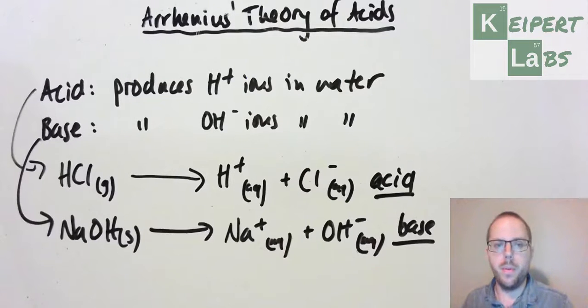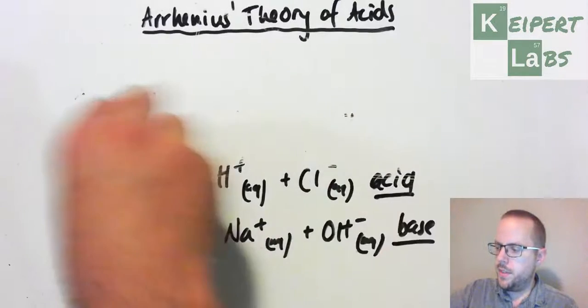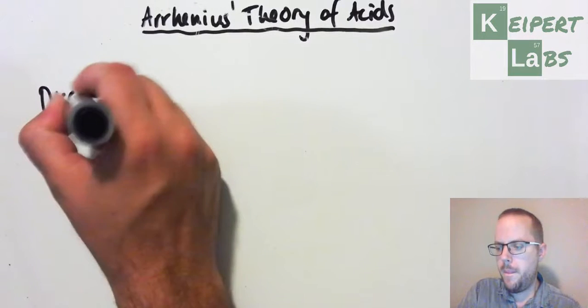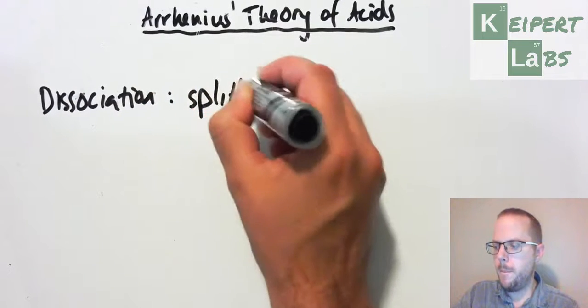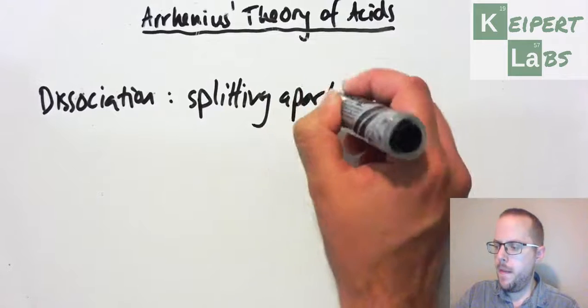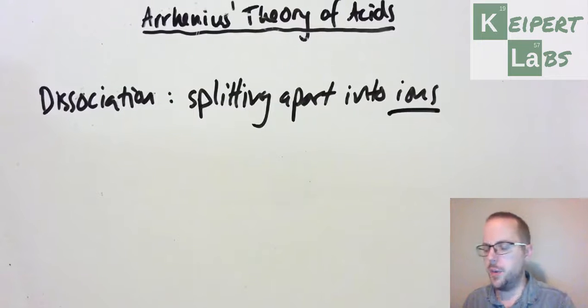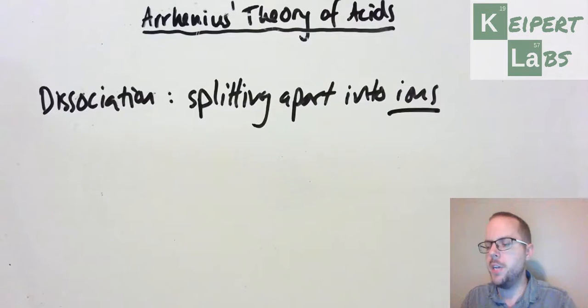Now there are heaps of other examples we could give. We're going to start to talk about this idea of dissociation or ionization. This is the idea of splitting apart into ions.